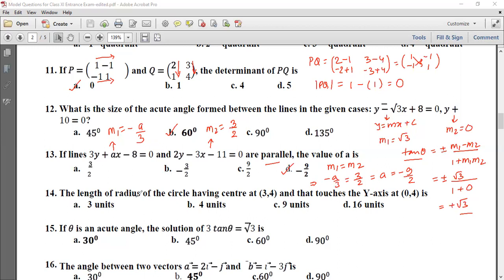Problem 14: The length of radius of a circle having center at 3, 4 and that touches y axis at 0, 4 is. The radius of a circle that touches the y axis is equal to the x coordinate of the center. So x coordinate here is 3, so this is equal to 3 units.